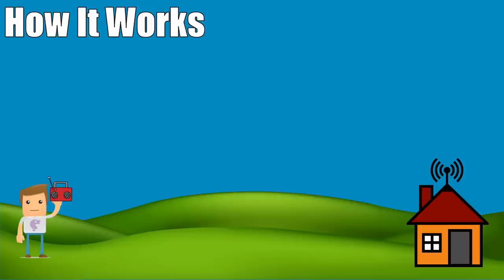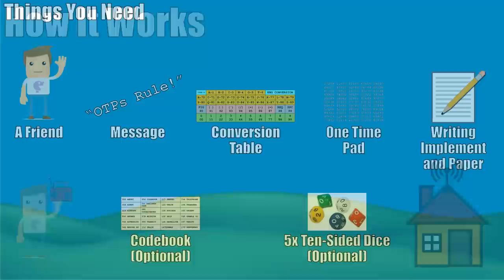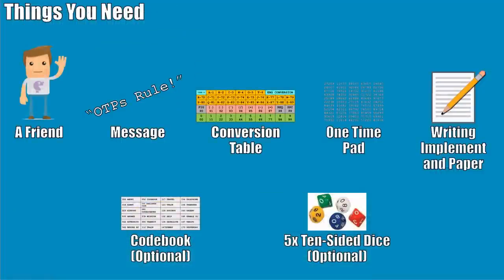That's an oversimplified explanation but that's the beauty of it — it's simple. So let's dig into the meat and potatoes. The first thing you need to get started with a one-time pad is a friend — someone to send the message to, a trusted individual who is going to keep their stuff secure on their end, so you can communicate securely between the two of you.